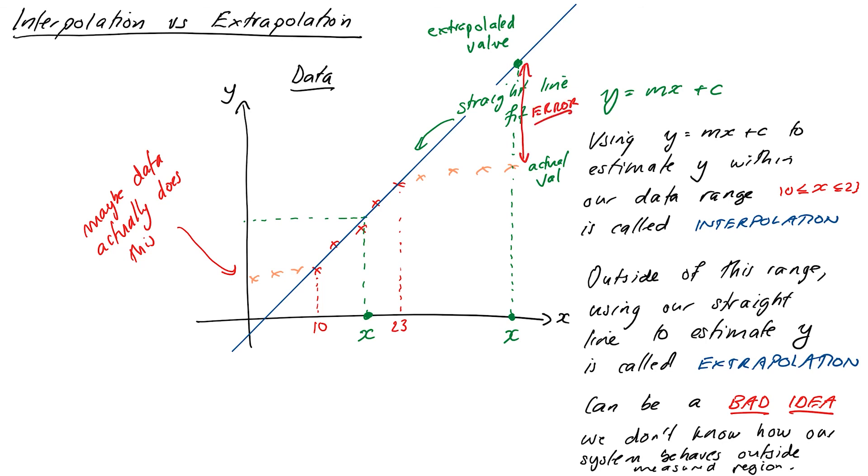So when we use our straight line to, or our measured line, to estimate something outside of our data range, this is known as extrapolation, and is usually considered to be quite a bad idea, unless we have some very sound reason to believe that our data should behave that way outside of our measured range.